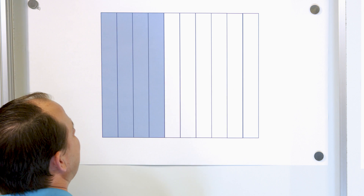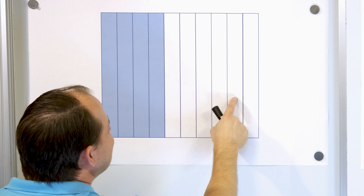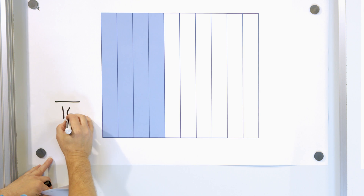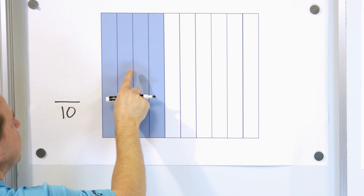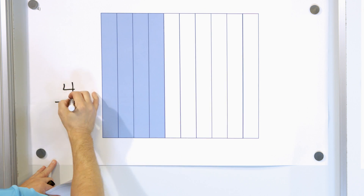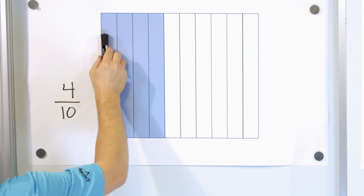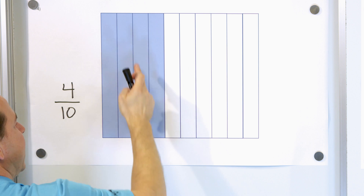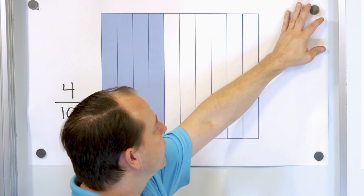Our next problem: we want to write down what fraction of this object we have. How many pieces did we cut it into? One, two, three, four, five, six, seven, eight, nine, ten pieces. So we cut this object into ten pieces — that number goes on the bottom. How many pieces do I have? One, two, three, four out of ten pieces, so this is four out of ten pieces, also called four tenths. One rectangle would be one out of ten, then two out of ten, three out of ten, four out of ten.